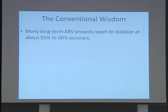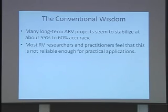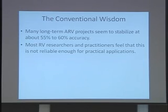Many long-term ARV projects seem to stabilize at about 55 to 60 percent accuracy. Some don't — some continue to suffer decline effects and end up below 50 percent, and some may stabilize at higher values. This is a difficult issue to research because there are a lot of people who brag about their ARV potential, but relatively few who publish about it reliably.